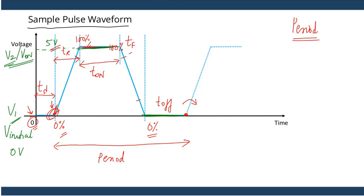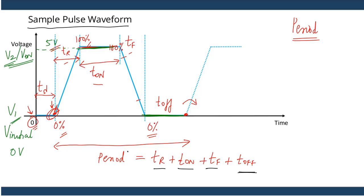Looking at the waveform, the period is the sum of TR (rise time), plus T-on (on time), plus TF (fall time), and finally T-off (off time). In most cases you will never get to set the off time directly. Instead, you set the rise time, the on time, the fall time, and finally the period — and this automatically sets the off time. We will understand that with actual values.